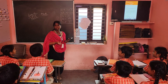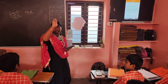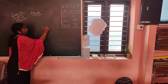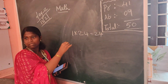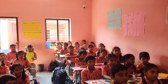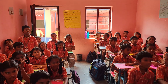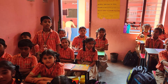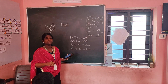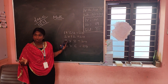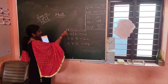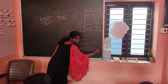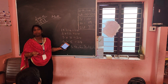Can anyone tell me the factors of 24? Very good. 1 times 24 equals 24. 2 times 12 equals 24. 3 times 8 equals 24. 4 times 6 equals 24. So the factors of 24 are: 1, 2, 3, 4, 6, 8, 12, 24.